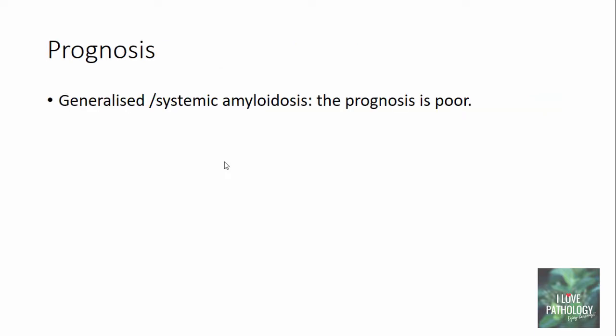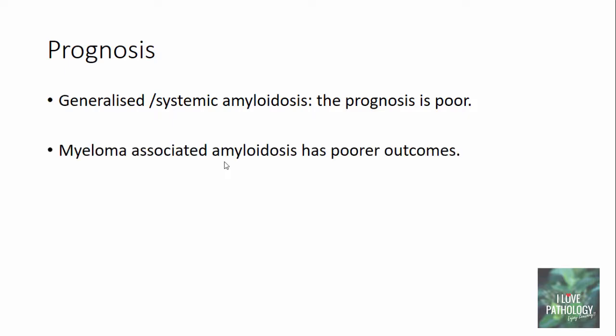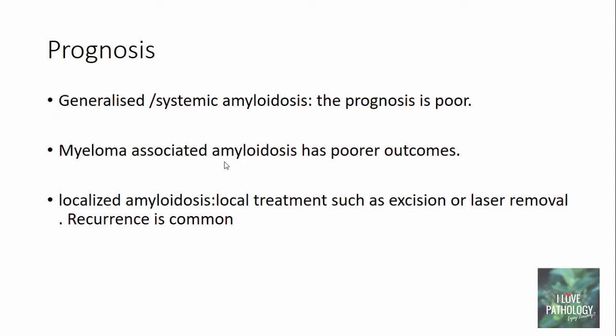Regarding prognosis, generalized or systemic amyloidosis carries a poor prognosis, and myeloma-associated amyloidosis has the poorest outcome. In localized amyloidosis, treatment is local excision or laser removal, but recurrence is very common if removal is incomplete.